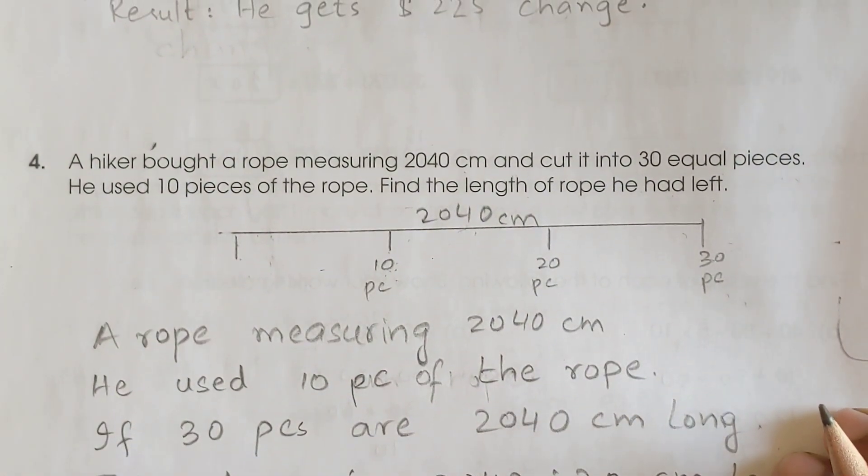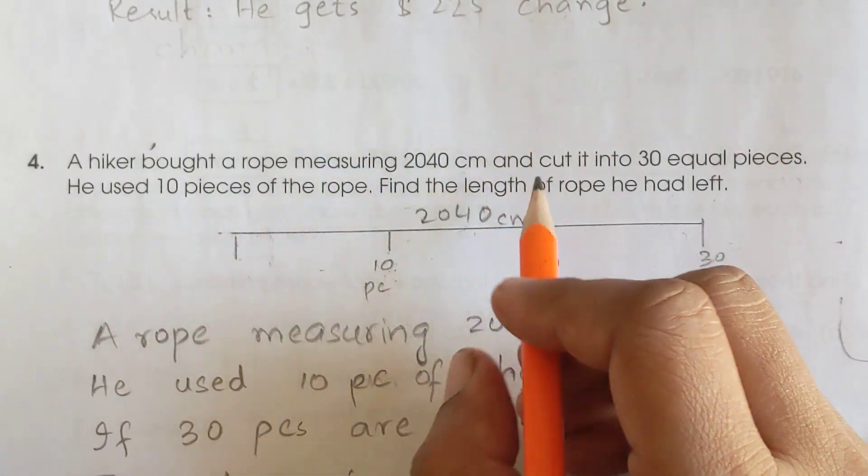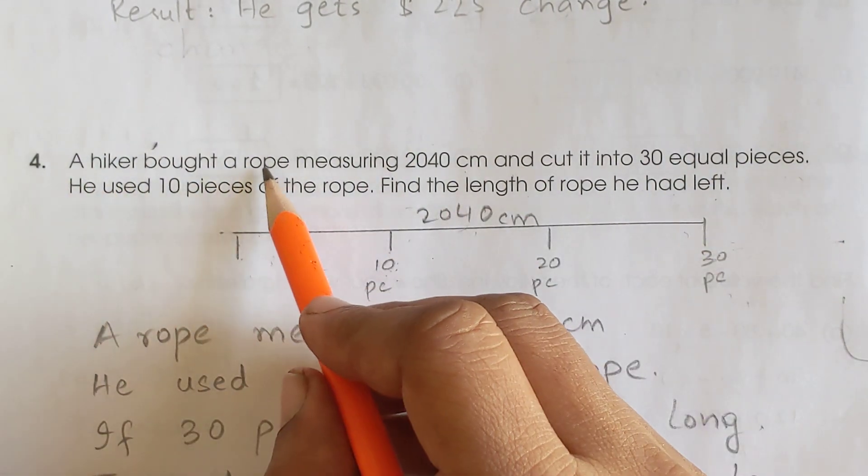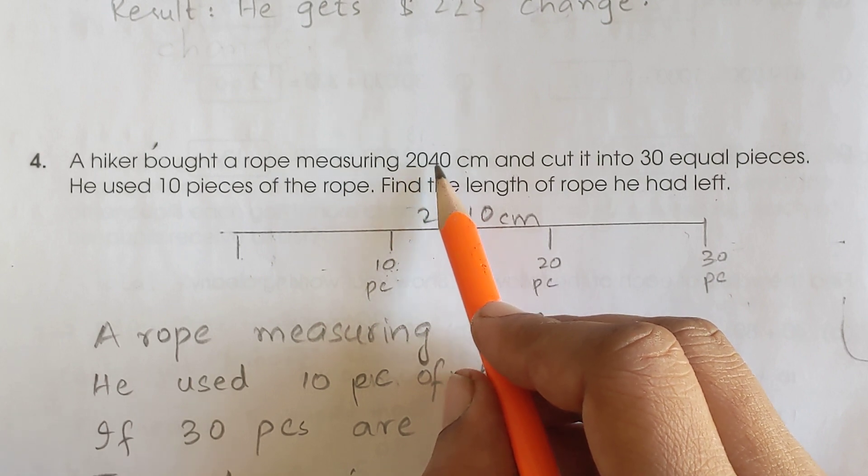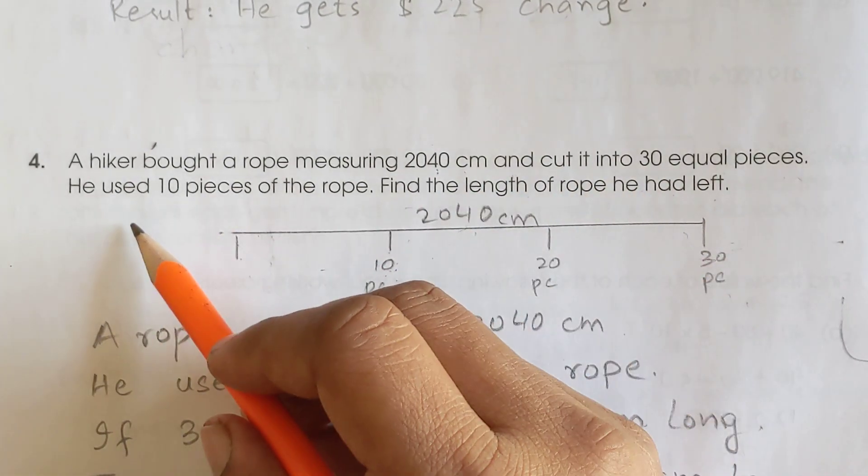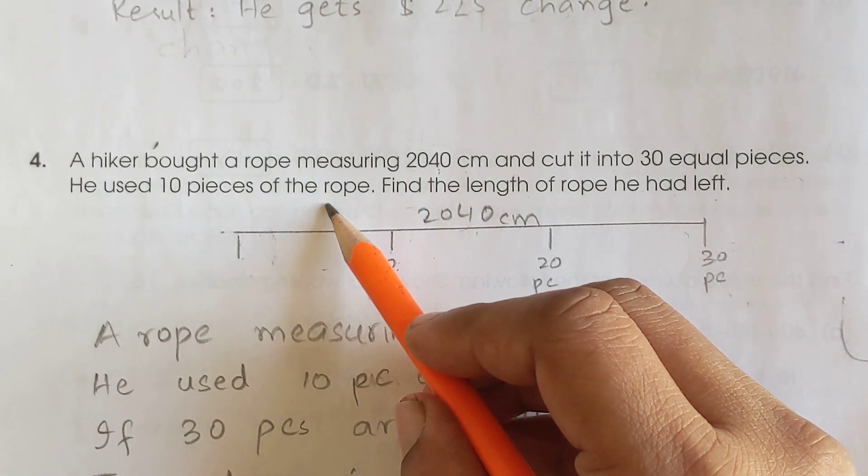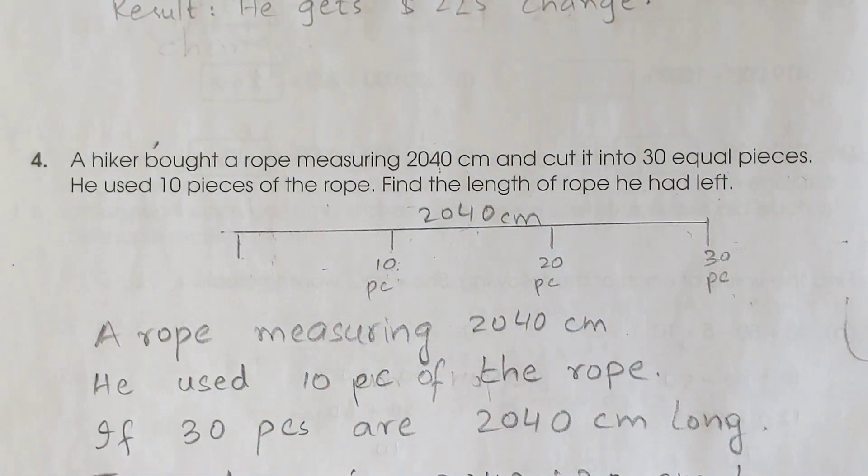Okay, so that's a simple question. Now let's look at question number 4. A hiker bought a rope measuring 2040 cm and cut it into 30 equal pieces. He used 10 pieces of the rope. Find the length of the rope he had left. We need to find the remaining length of rope. This is a very simple question.